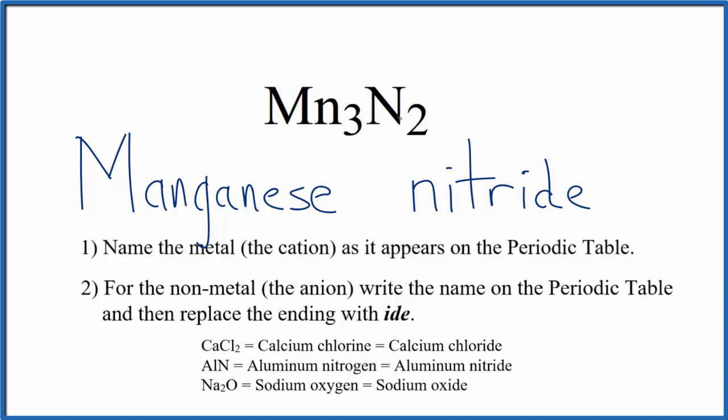We know that the nitride ion, nitrogen, is in group 15, also called 5A. It'll be 3-. And since we have two of them, 2 times 3 minus is 6 minus.